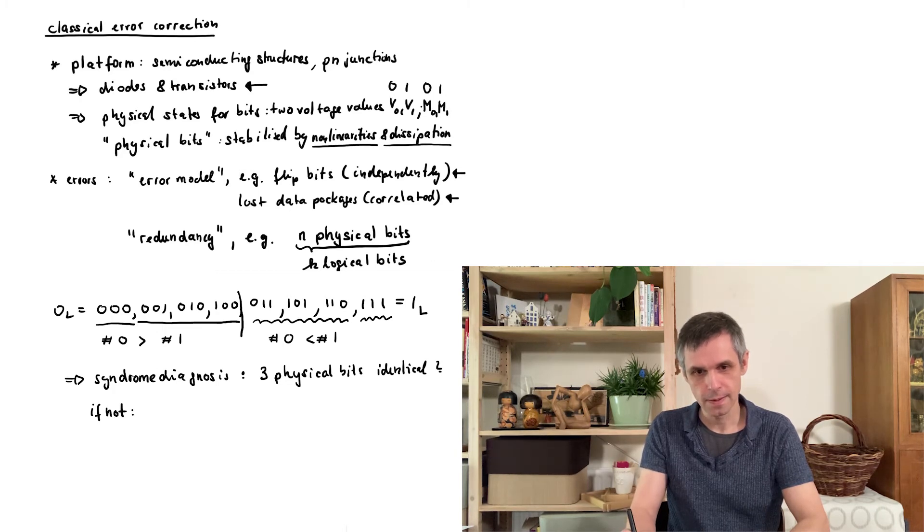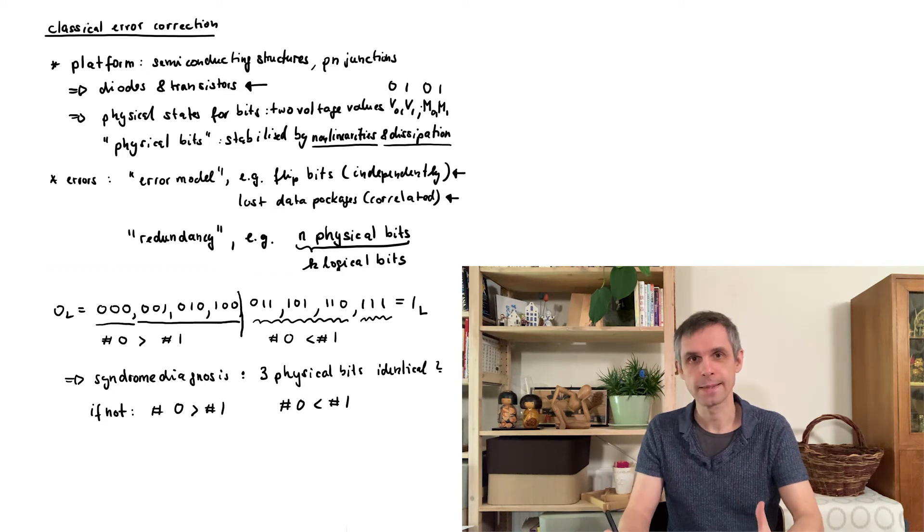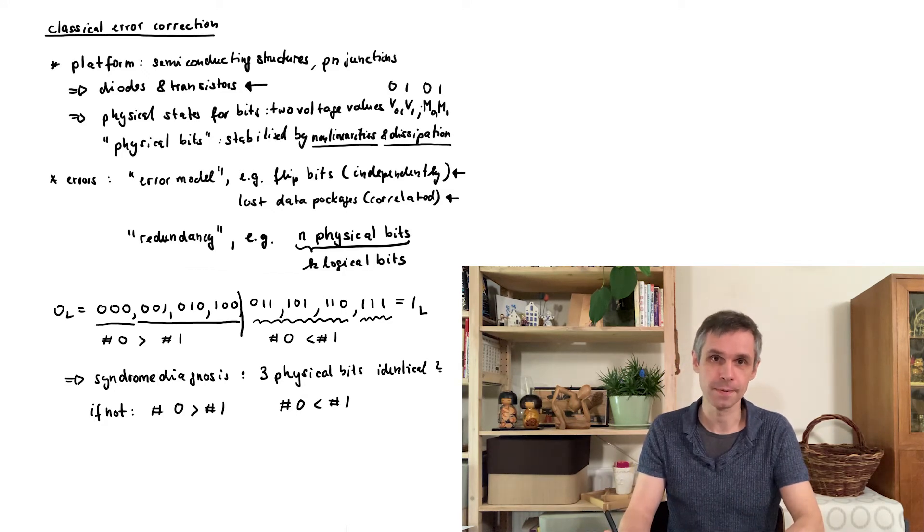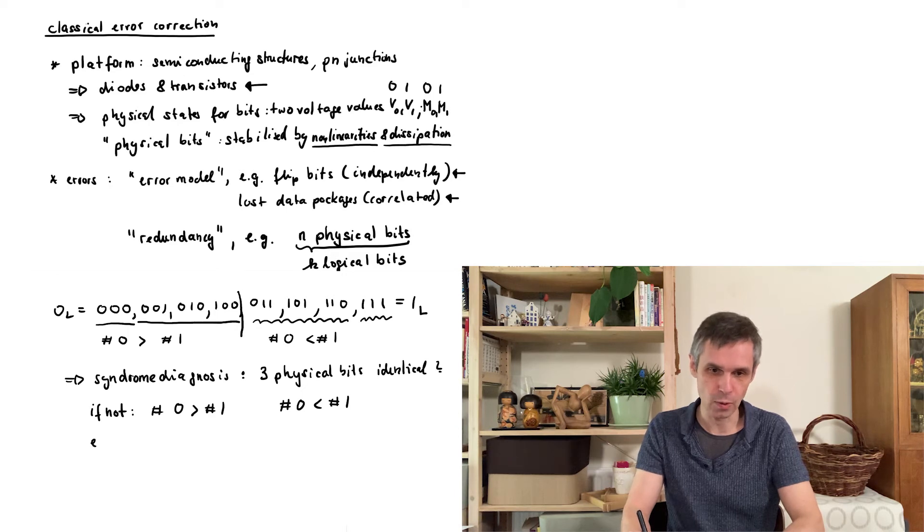And if this isn't the case, then we determine whether there are more physical bits in the state zero or in the state one. And then we identify the one physical bit which is in a different state than the two others, so our error bit.